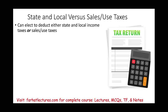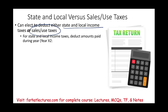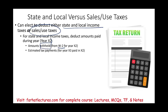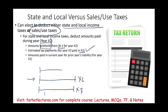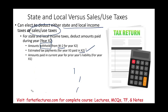Let's talk about state and local income tax versus sales and use tax. You have to choose between either the state and local income tax or sales and use tax. For state and local income taxes, let's assume we are dealing with year X2 — anything you pay in year X2 is deductible. So if you have a W-2 for year X2, the withheld amount is deductible. Also, in year X2 you might prepay some taxes for year X3 — that's also deductible in X2. And in year X2 you might pay taxes you owe for year X1. As long as you pay it in year X2, you add up everything paid in that year. Sales and use tax is deductible in the year paid — it doesn't matter which year it's for, it's when you pay it.